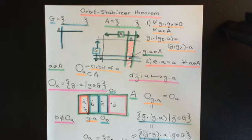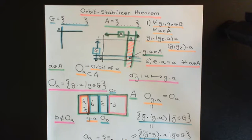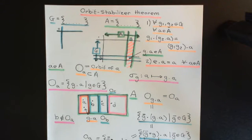Welcome to this next video in which we are discussing the orbit-stabilizer theorem. In the previous video we discussed orbits. Now what we're going to do is discuss stabilizers, do a bit of an introduction to stabilizers, and then we'll put the two together to arrive at the orbit-stabilizer theorem, which talks about a correspondence between the elements of an orbit and the left cosets of a stabilizer.